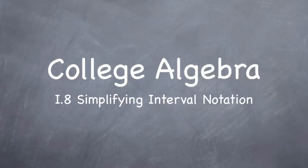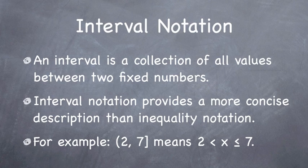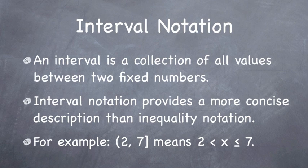This is lesson 1.8 on Simplifying Interval Notation. An interval is just a collection of all values between two fixed numbers. For example, we might talk about the interval between negative 1 and 10, or between 3 and 17 — taking all the numbers between 3 and 17, maybe including the endpoints, maybe not. Instead of using traditional inequality notation, interval notation allows for a more concise way to denote the same information.